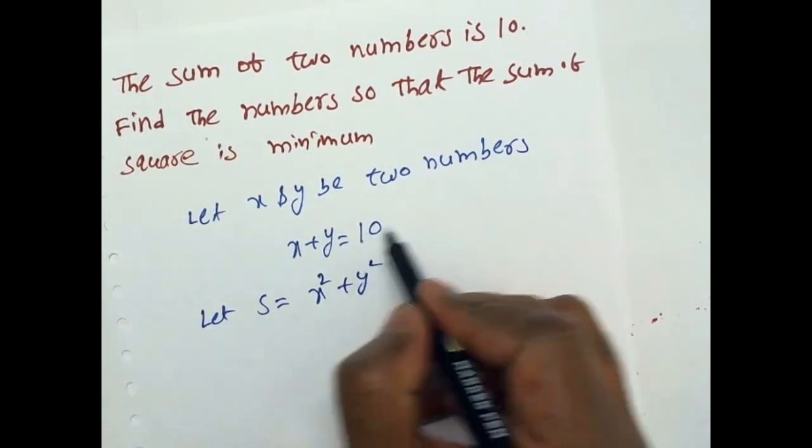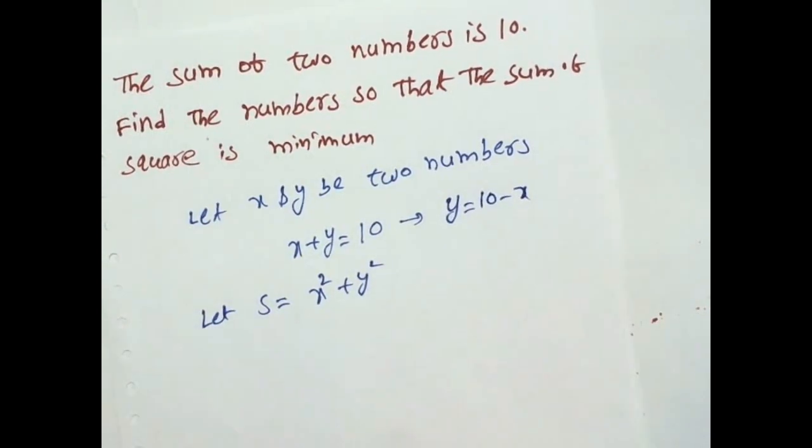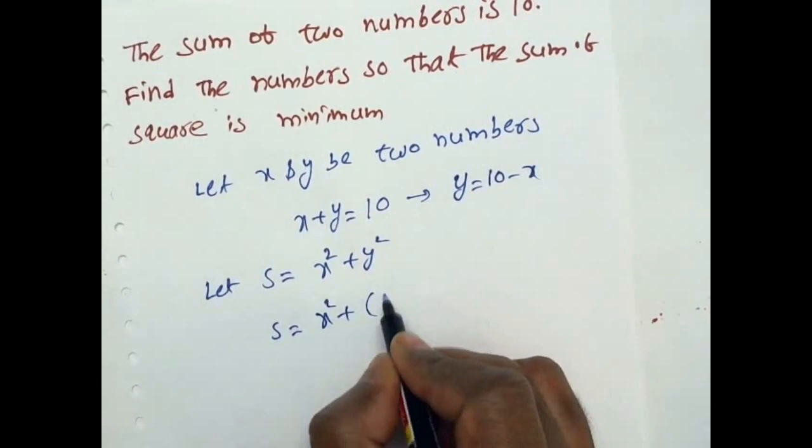From equation Y value, Y is equal to 10 minus X. Now S is equal to X square plus Y square.